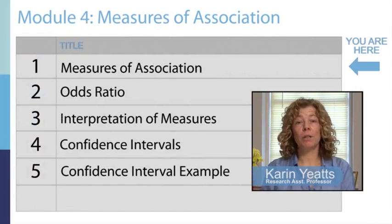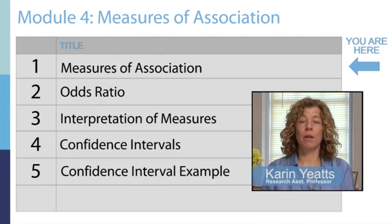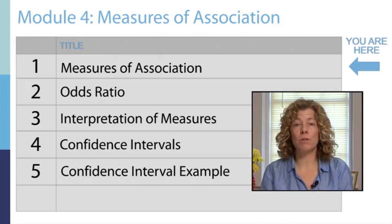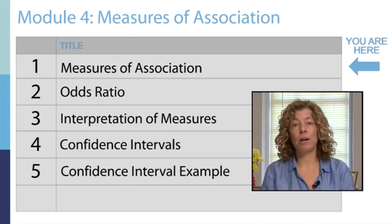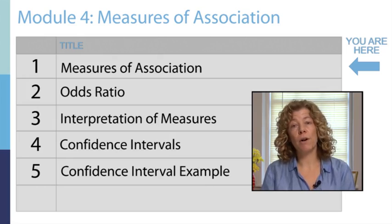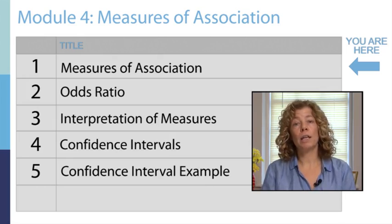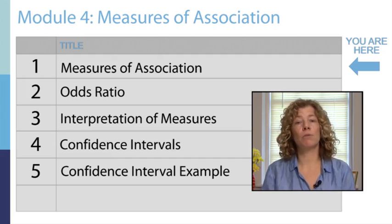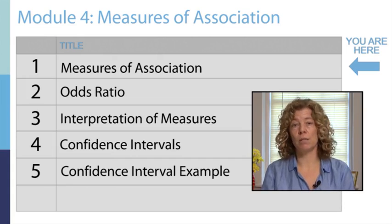Welcome. In this module, we're going to talk about the measures of association. The most important things to remember about the measures of association are that they can either tell us something about the strength of the association between an exposure and a health outcome, or they can help us quantify the absolute excess of the disease that's related to the exposure of interest.